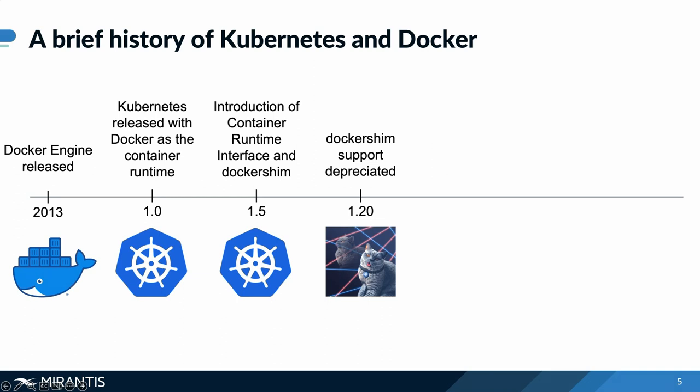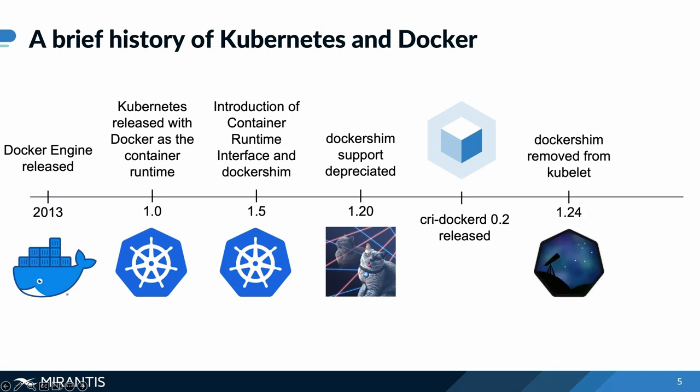The Kubelet uses a module called Docker shim that implements the CRI support for Docker. That has been deprecated, even though it was still within the Kubernetes environment. The Docker shim support was then taken out, and Mirantis, along with a number of open source maintainers and contributors along with Docker themselves, started working on CRI Docker D, and it was released. Docker shim support was officially removed from the Kubelet in version 1.24 of Kubernetes.